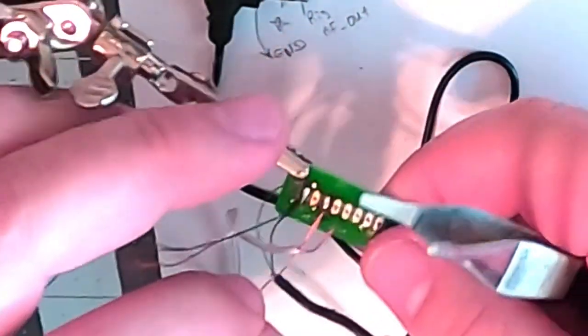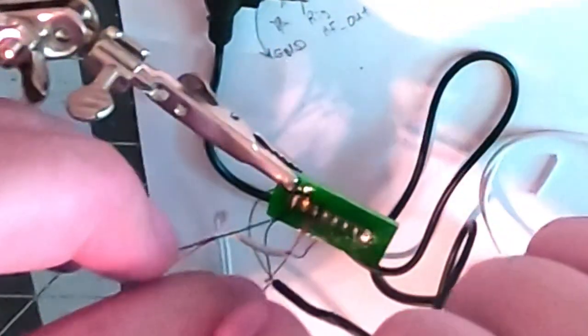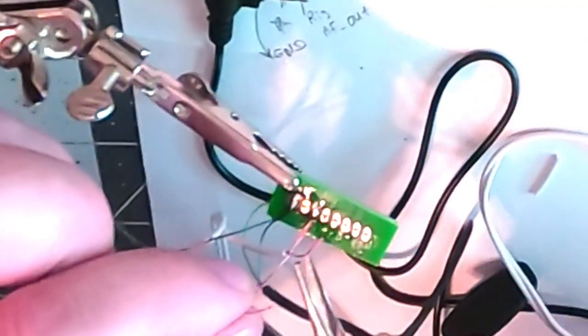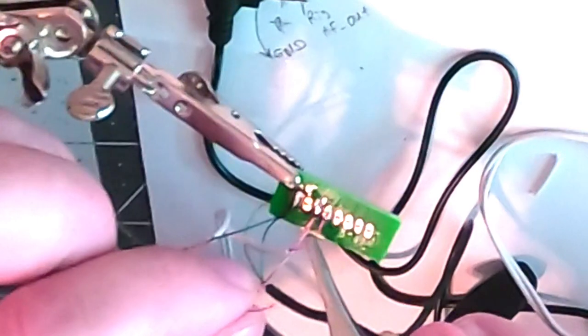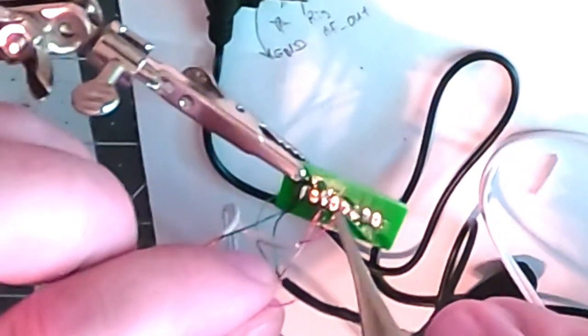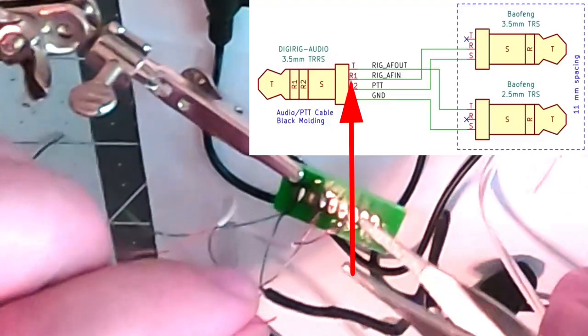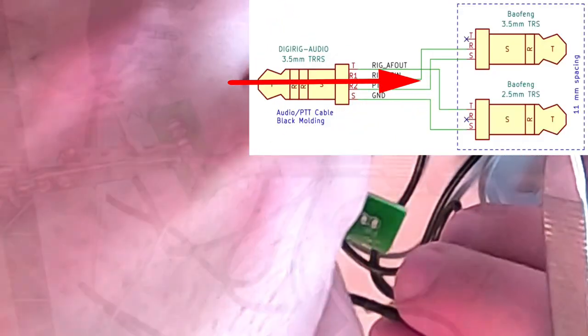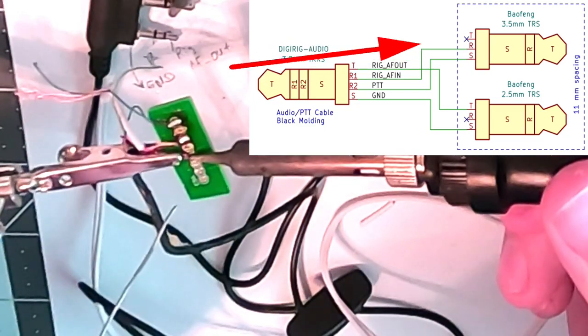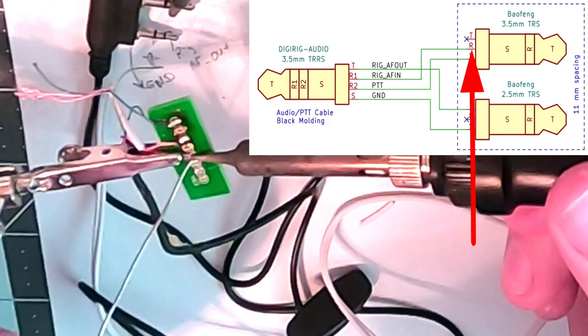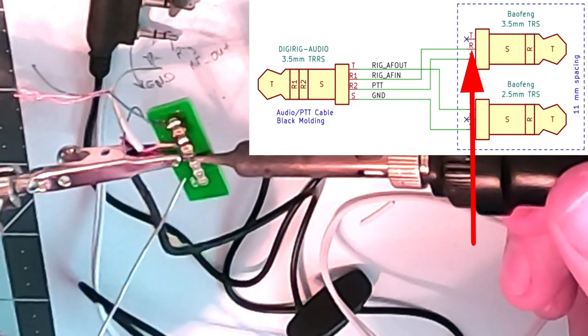We know that these two belong in that hole right there. That one does not want to stay. Then we'll apply some solder to the pad.